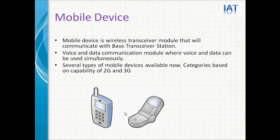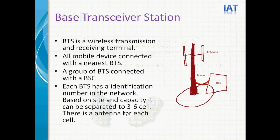Let us have a description for each item in the GSM network. Mobile Device is a wireless transceiver module that communicates with the BTS. It is a voice and data communication module where voice and data can be used simultaneously. Currently, several types of mobile devices are available in the market based on 2G and 3G. Base Transceiver Station is a wireless transmission and receiving terminal. All mobile devices connect with the nearest BTS. A group of BTS will be connected with the BSC. Each BTS has an identification number, and based on site and capacity, it can be separated into 3 to 6 cells, each with an antenna.